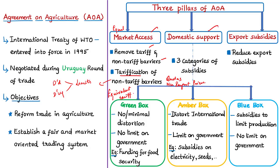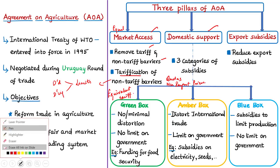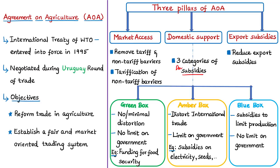The second pillar is domestic support — domestic subsidies given by a government within its country. The WTO has classified subsidies into three categories based on their ability to distort trade: green box, amber box, and blue box subsidies. Green box subsidies do not distort trade or cause minimal distortion — for example, government funding for food security, environmental conservation, research programs, disaster relief, farmer training programs, and pest or disease control programs. There is no limit on governments for giving green box subsidies.